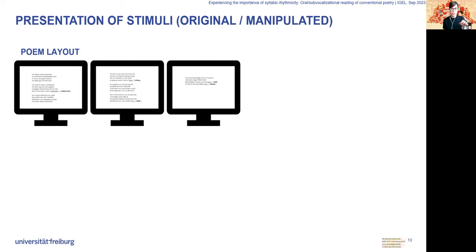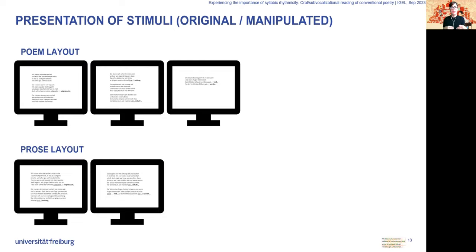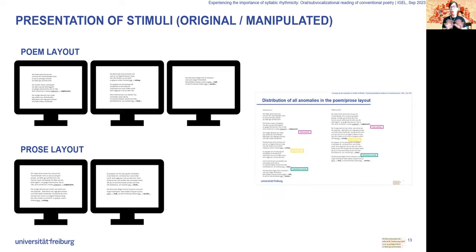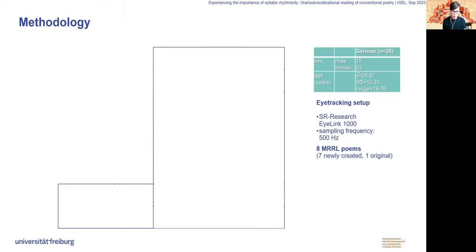The task for participants was to read the text silently on the monitor. They were displayed as either the original or the manipulated version. No comprehension questions or memory questions were given. 38 participants' eye movements were recorded using SR Research EyeLink 1000.